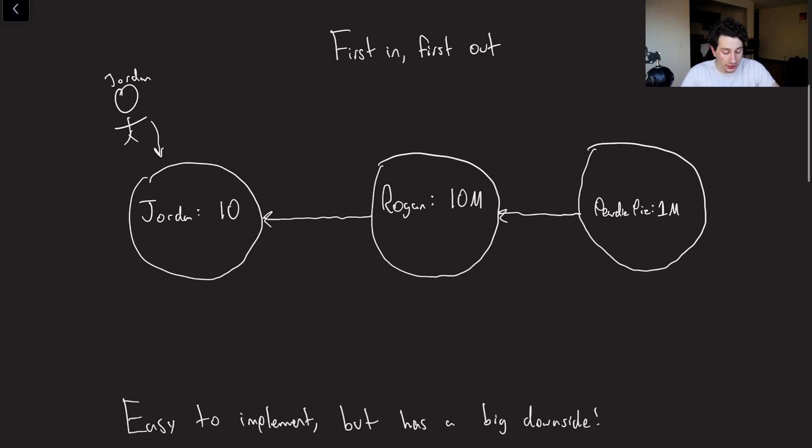So let's talk about some eviction policies that we can use to determine what we actually get rid of in a cache when we run out of space, and how we might actually go ahead and implement it. The first one is first in first out or FIFO. So FIFO, as the name implies, is implemented using a queue.